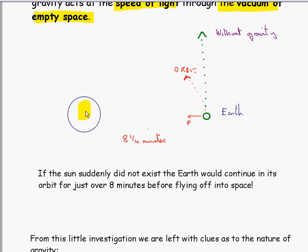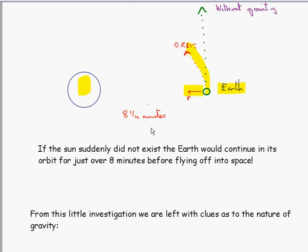So if we take the Sun and the Earth in its orbit, it is kept in its orbit by this force of gravity. If the Sun did not exist suddenly, then the Earth would continue in its orbit for just over 8 minutes before flying off into space in this direction.